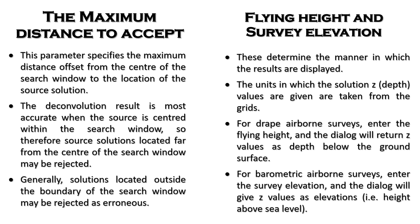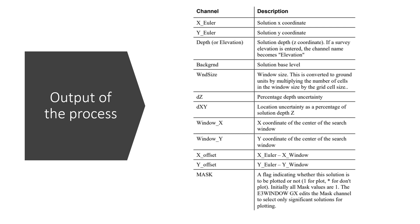For drape airborne surveys, you enter the flight height and the depth estimates will be returned as values below the ground surface. For barometric airborne surveys, the survey elevation will be entered and depth sources will be given as heights above sea level. When the process is run, the output channel names include x_Euler for x coordinates and y_Euler for y coordinates. We will see how to use these to window data, especially the dz, in the practical session.